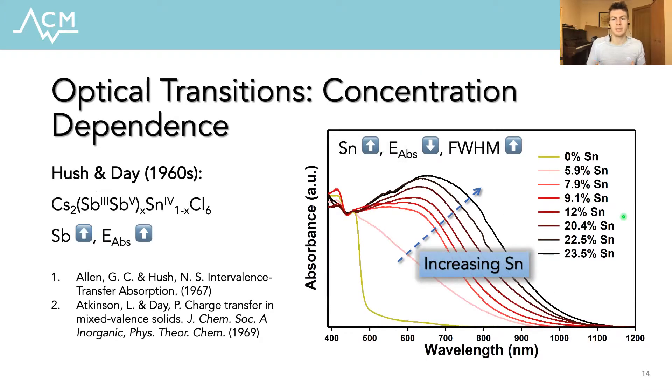One final question we wanted to answer was the origin of unusual concentration dependence of the absorption peak. So in the classic work from the 1960s by Hush and Day on intervalence charge transfer in antimony doped cesium chloride, they found that the energy of the absorption maximum increased with greater doping concentrations. They suggested that this was due to a destabilization of the excited state at high doping concentrations. However, in our case, we found that as the doping concentration increased, the energy of the absorption decreased while the peak became more broadened. So this behavior again was explained by our computational analysis from which we calculated enhanced stabilization of the relatively delocalized excited state at high doping concentrations due to greater interaction and reduced spatial separation with other nearby excited complexes.